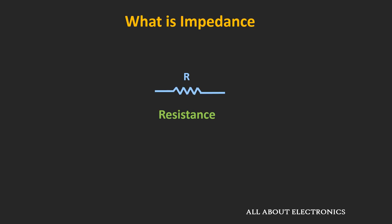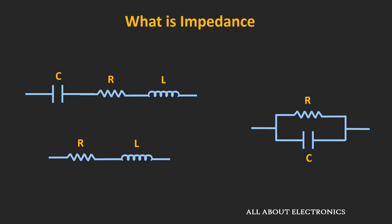But resistance is frequency independent. That means if you have any resistive network or simple resistor and you operate it at DC voltage or at 100 kHz, the value of the resistance will not change with frequency. On the other hand, the impedance of the circuit will change with frequency, because it involves reactive elements like capacitors and inductors.